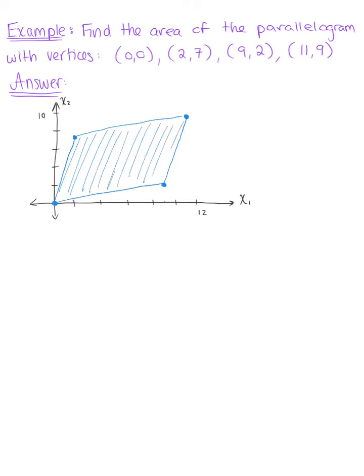So in order to use the determinant here we need to define a matrix for this parallelogram. So we have our first column vector here at (9,2). And our second column vector from the origin to this point, our second column vector is (2,7).